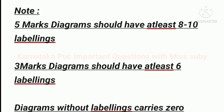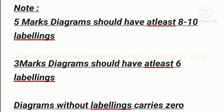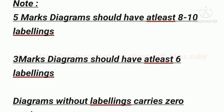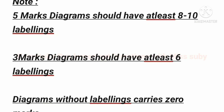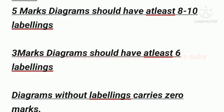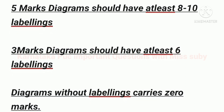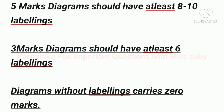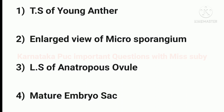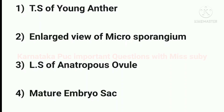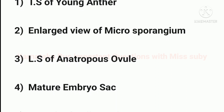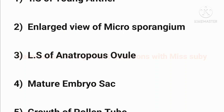Important note: 5-mark diagrams should have at least 8 to 10 labellings, 3-mark diagrams should have at least 6 labellings, and diagrams without labellings carry 0 marks. The important diagrams are: TS of anther, next enlarged view of microsporangium.